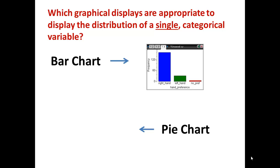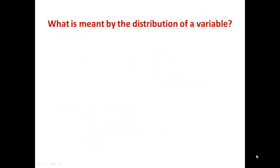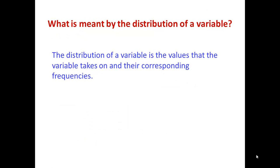We could also have used a pie chart. For a pie chart to be appropriate, it must contain all the categories that make up the whole for that variable. The distribution of a variable is the values that the variable takes on and their corresponding frequencies.